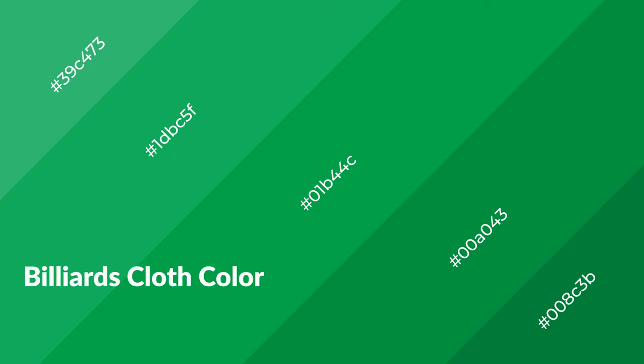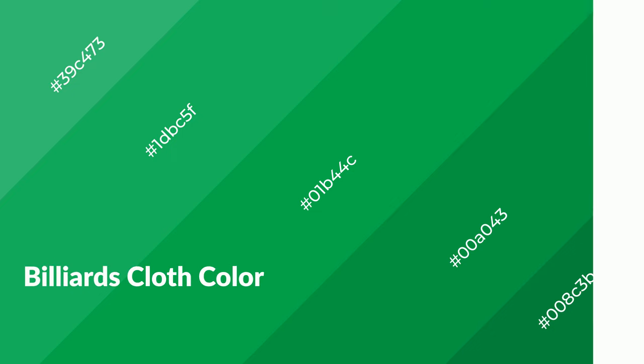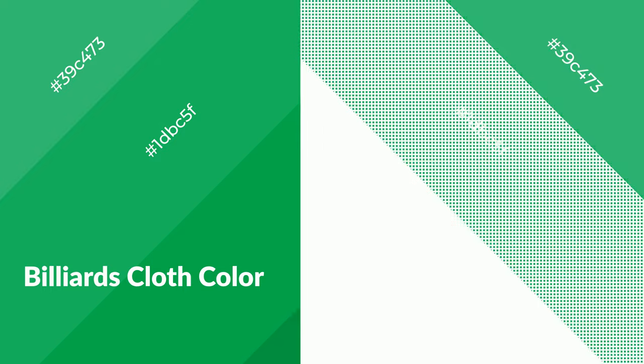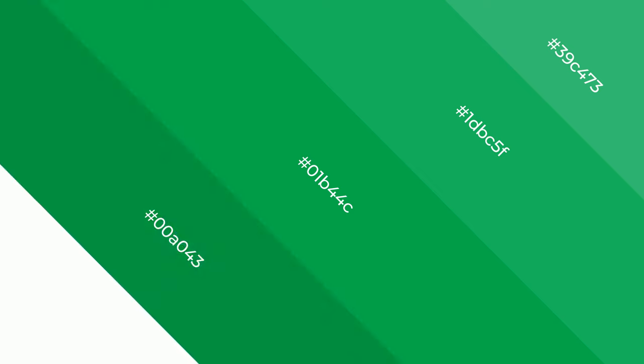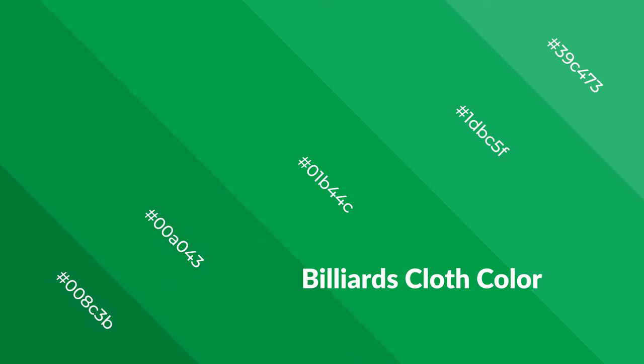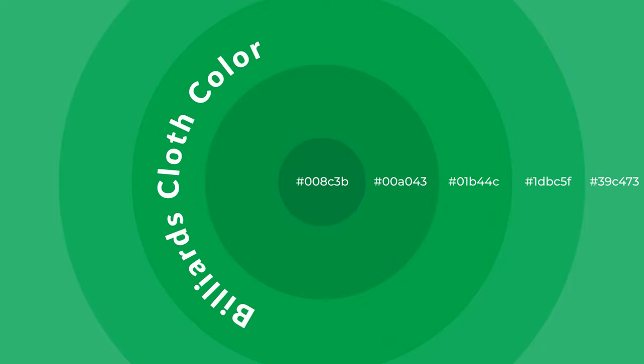Billiards cloth is a cool color and it emits calming, serene, soothing, refreshing, spacious, unwinding, peace, and relaxed emotions. Cool colors are like water, ice, sky, grass, soft, and snow. You can see them used in baby products.